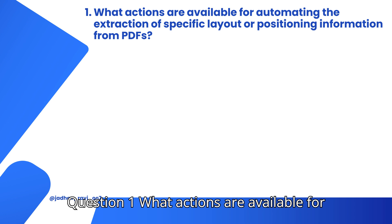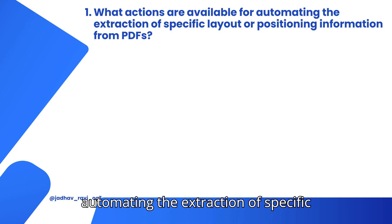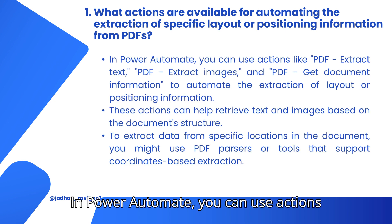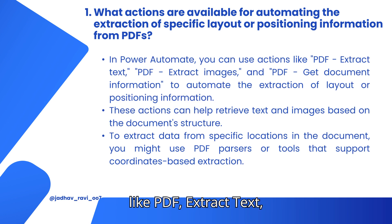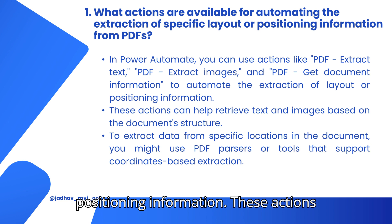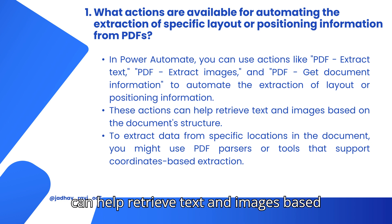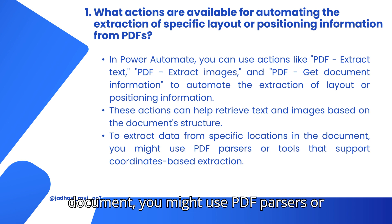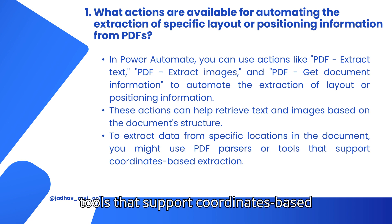Question 1: What actions are available for automating the extraction of specific layout or positioning information from PDFs? In Power Automate, you can use actions like PDF Extract Text, PDF Extract Images, and PDF Get Document Information to automate the extraction of layout or positioning information. These actions can help retrieve text and images based on the document structure. To extract data from specific locations in the document, you might use PDF parsers or tools that support coordinates-based extraction.